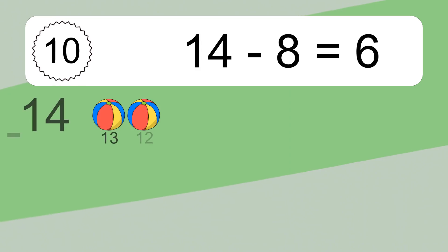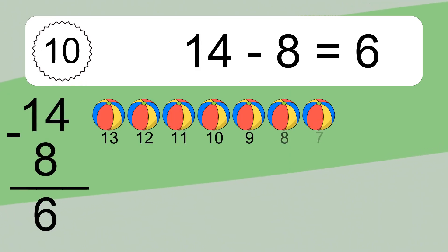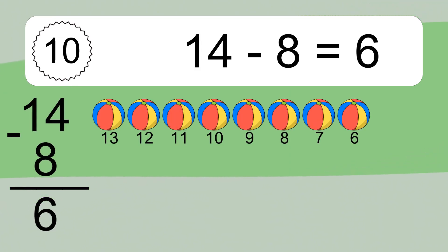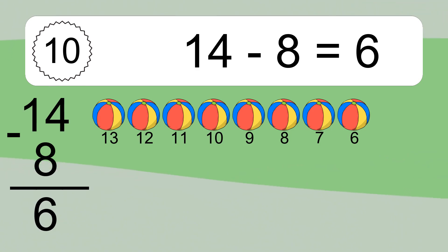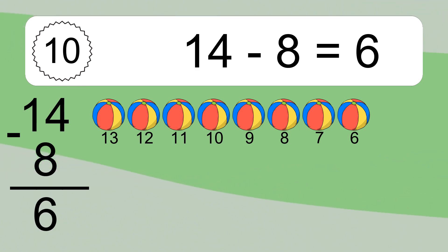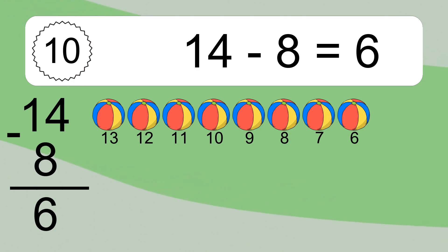14 minus 8 equals what? 14 minus 8 equals 6. Let's count it: 13, 12, 11, 10, 9, 8, 7, 6.